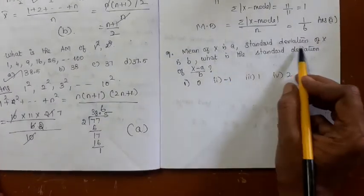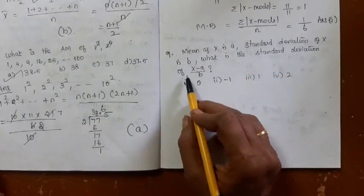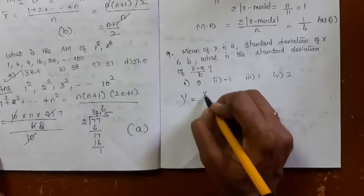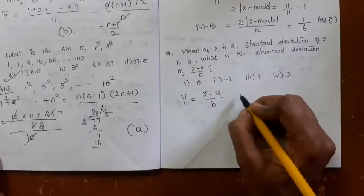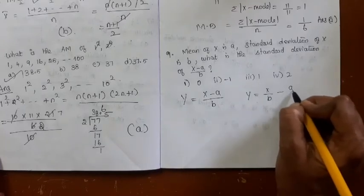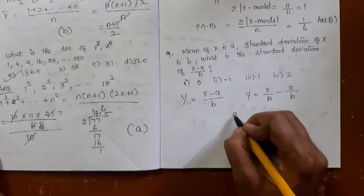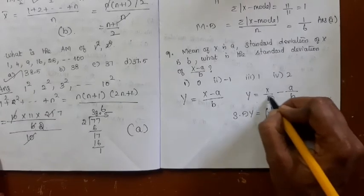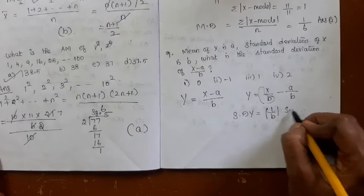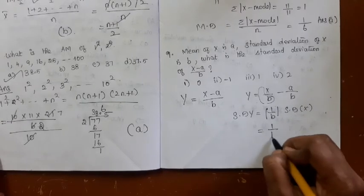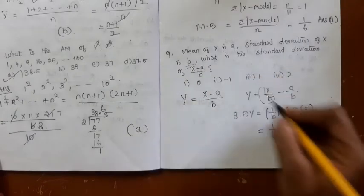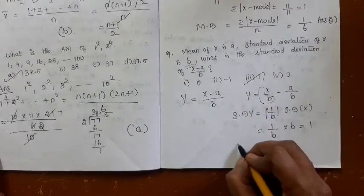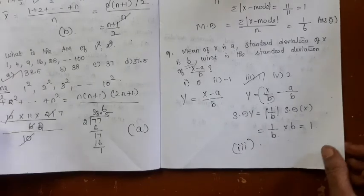Next problem: mean of x is given as a, standard deviation of x is b. Find the standard deviation of (x - a)/b. Let y = (x - a)/b = x/b - a/b. Standard deviation of y = |1/b| × SD(x). SD(x) = b, so SD(y) = (1/b) × b = 1. The answer is option 3.